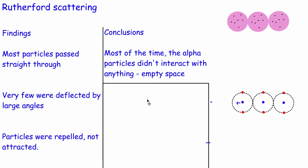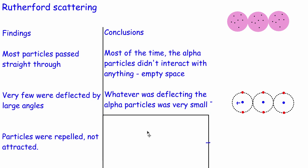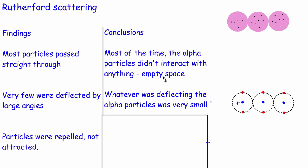They saw that a few were deflected by large angles, so whatever was doing the deflecting was really, really small — if it were bigger, more would be deflected by large angles. This can't be true for the plum pudding model because the positive charge there is really diffuse and so would not actually repel alpha particles away. So the positive thing doing the repelling must be very small and concentrated. If alpha particles are not interacting with it, they must be quite a long way away from it, which is why lots of the atom must be empty space.